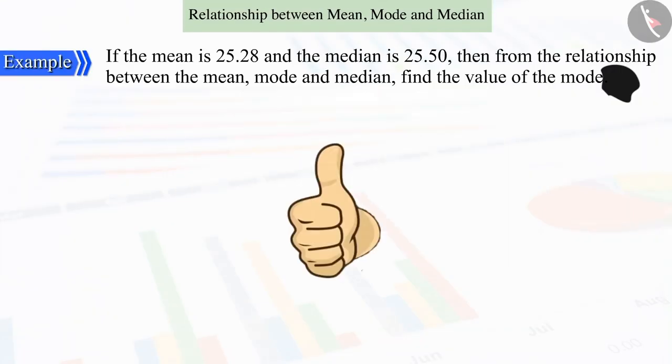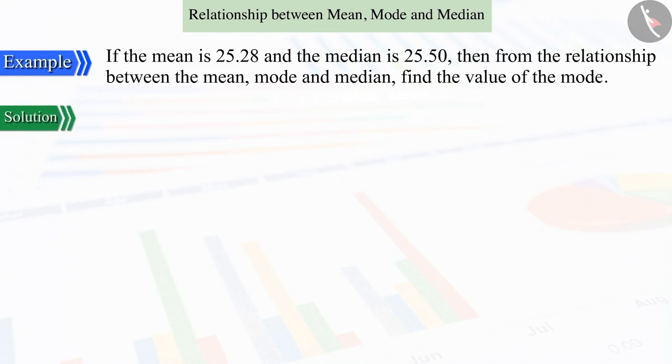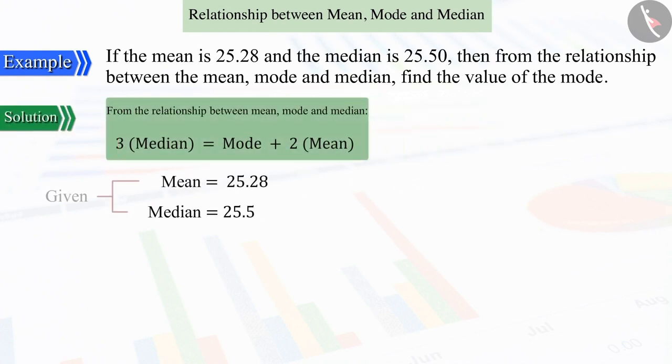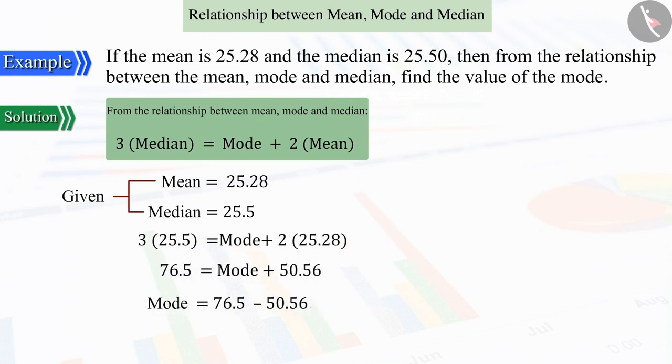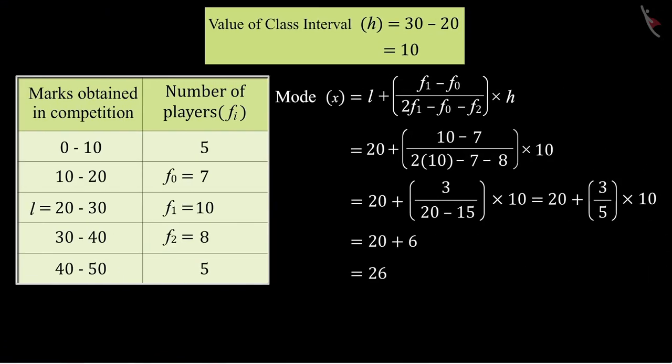Good. Upon substituting the value of the mean and the median in the relationship between these three and solving, we get the value of the mode as 25.94 approximately. If we compare this value with the value found using the formula for the mode in the previous video, then we can say that these two values are almost equal to each other.